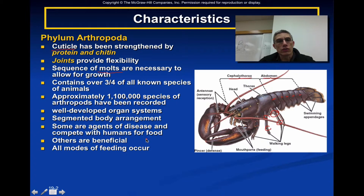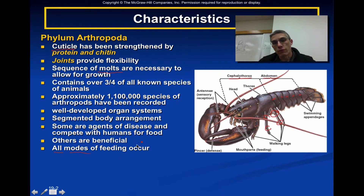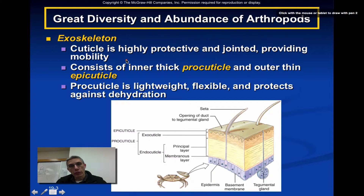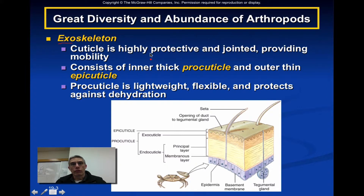Some arthropods are agents of disease and compete with humans for food, but many more are very beneficial to us and our environment. All modes of feeding behavior occur in this group. The exoskeleton is a highly significant characteristic. The cuticle is highly protective and jointed to provide mobility. It consists of an inner thick pro-cuticle and an outer thin epicuticle — as shown in the diagram, where the pro-cuticle encompasses both the exo-cuticle and endo-cuticle.